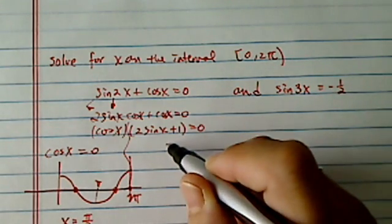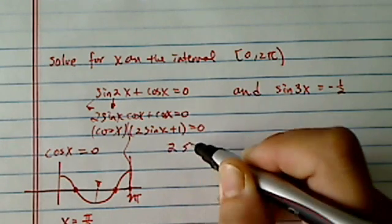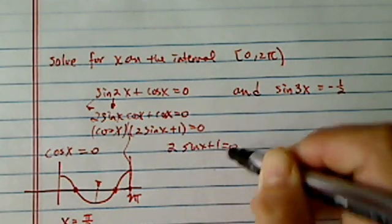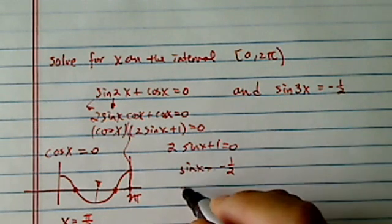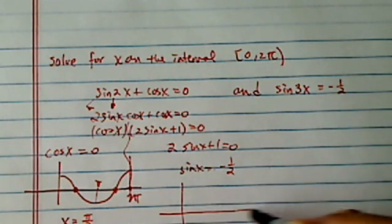And then for this half, we have 2 sin x plus 1 equal to 0, which means sin x equal to -½. This is a little bit involved, but not too bad.